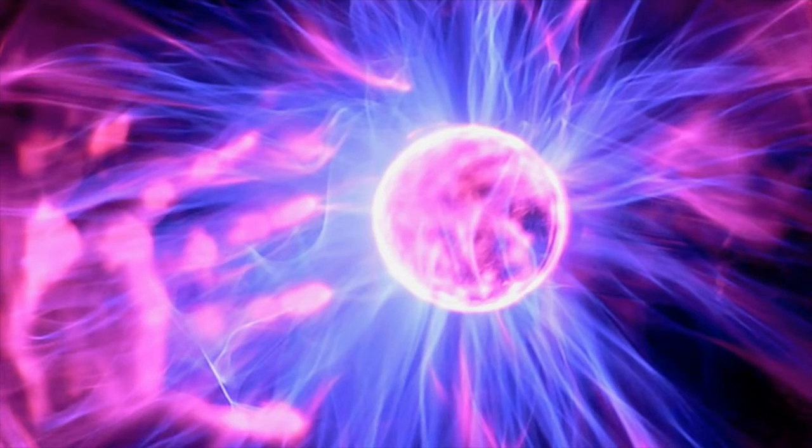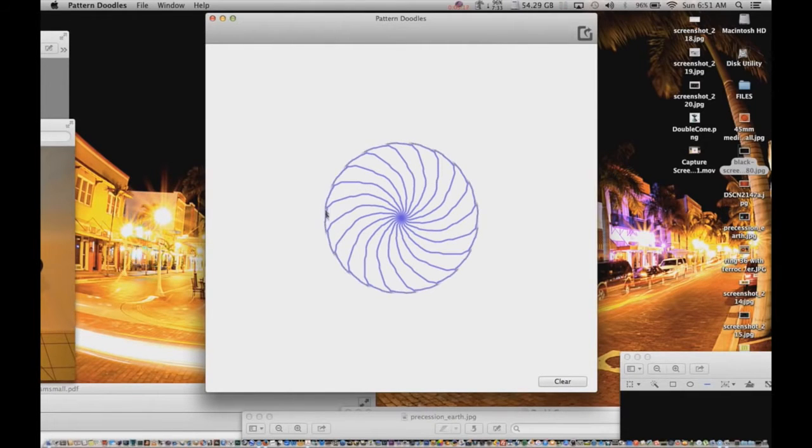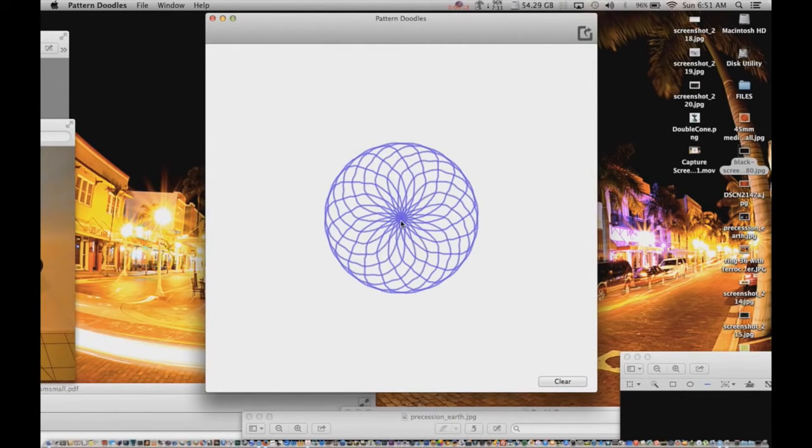What is mistaken for, and therefore labeled as gravity, are in fact, and this has been thoroughly peer-reviewed, magnetic lines of force, and the actions of accelerated charged particles moving at various velocities.